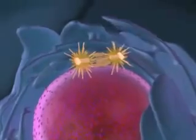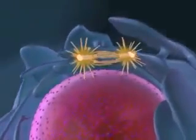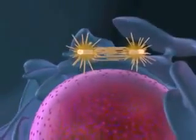As meiosis begins, a spindle forms and duplicated centrosomes start to migrate toward opposite poles of the cell. Back in the nucleus, the chromosomes are condensing.